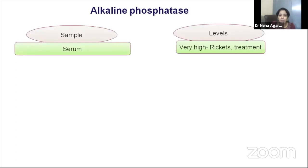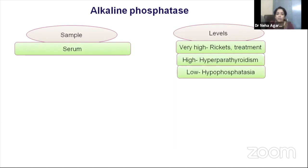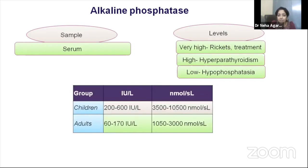Alkaline phosphatase (ALP), a marker of bone turnover, is a serum sample — very high in rickets or during treatment and in hyperparathyroid conditions. ALP is produced by liver, bone, and placenta; in children without liver disease, the majority of blood ALP reflects bone activity. ALP levels are age-dependent and comparatively high in children, so age-specific references must always be used when interpreting the calcium profile.